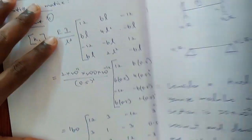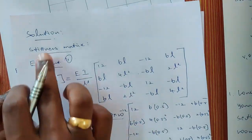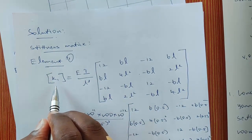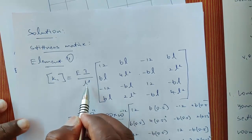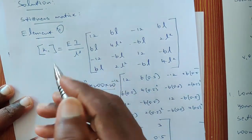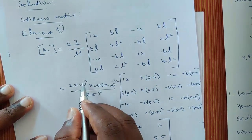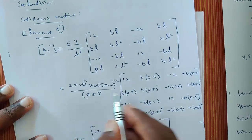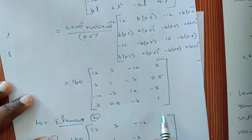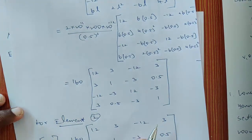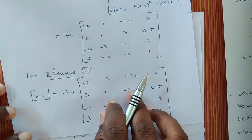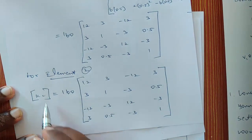The first step to solve the problem is to find the stiffness matrix. Consider element 1 alone. The stiffness matrix equation for the beam element is EI/L³ times the matrix. For element 1, E = 2×10¹¹, I and L are given — substitute L and calculate the stiffness matrix. Since the properties are the same for both element 1 and element 2, we will get the same stiffness matrix for element 2 also.